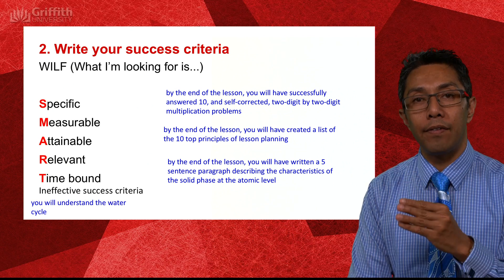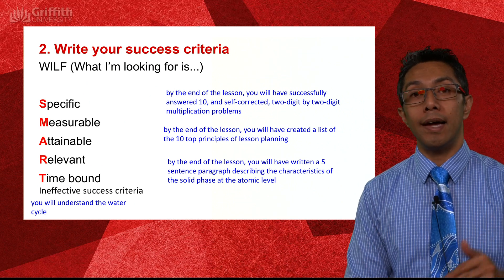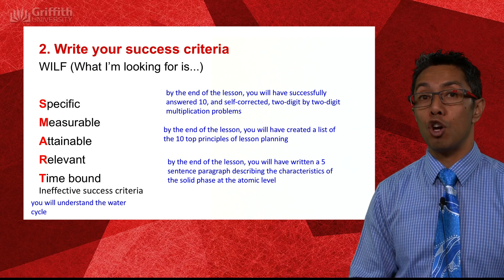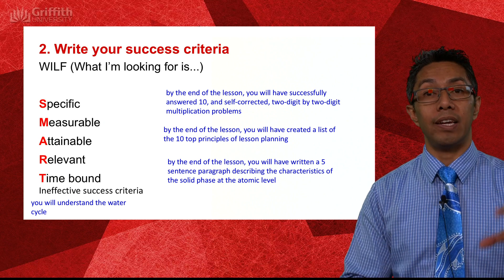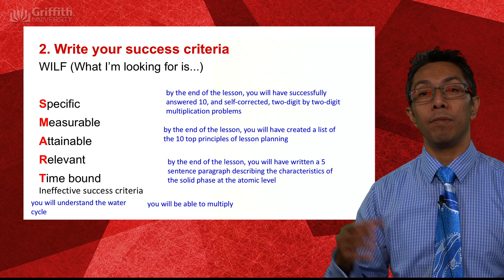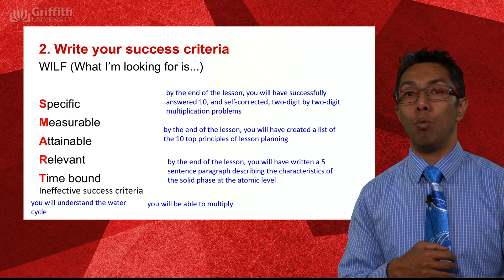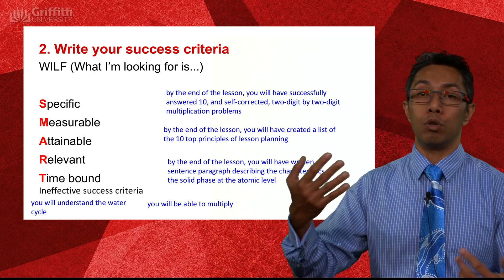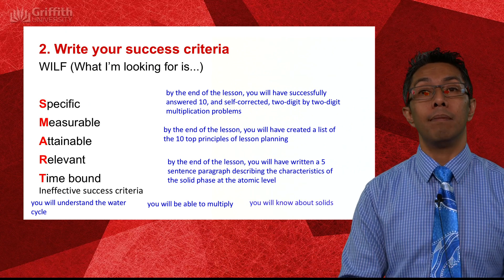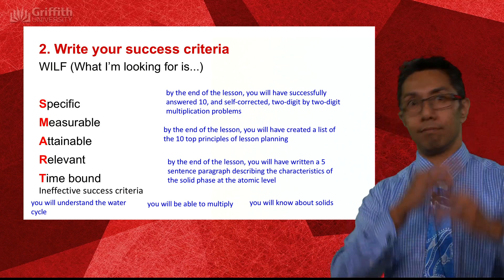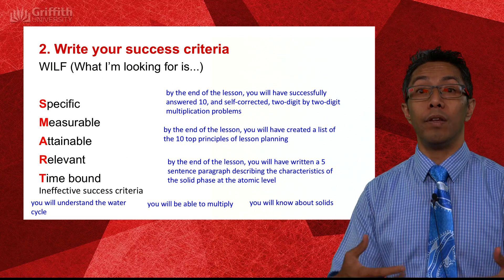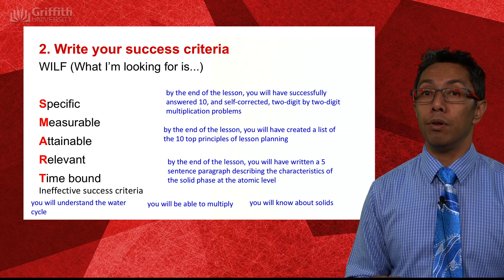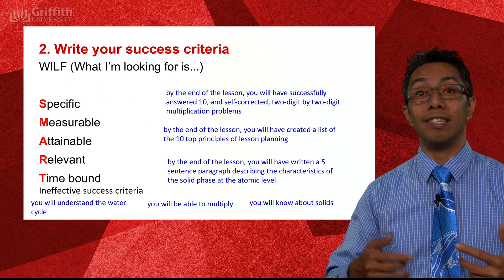Here are some ineffective success criteria. For example, 'What I'm looking for is: you will understand the water cycle' — how do you want me to demonstrate understanding? Write a paragraph, draw it, do an interpretive dance? Be more specific about what output you want. Similarly, 'you will be able to multiply' — multiply what? Two single-digit numbers, a double and triple digit, fractions? And 'you will know about solids' — do you want me to recall information, identify solids in the real world, or explain solids using the particle model? The more specific you are, the easier it is for students to demonstrate success.